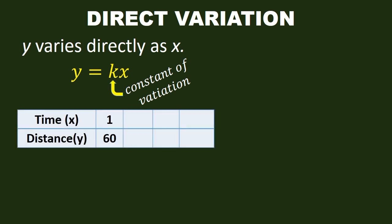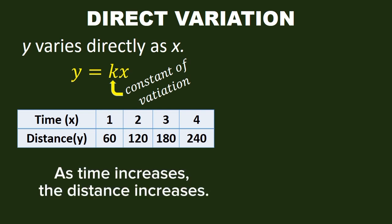One example that involves direct variation is about time and distance. We have this table. Time is our variable x and distance is y. A man using his car can travel for one hour a distance of 60 kilometers. At the same speed, if he can travel for two hours, the distance is 120 kilometers. For three hours, he can travel 180 kilometers, and so on. We can notice here that as time increases, the distance increases.